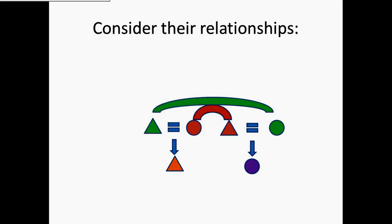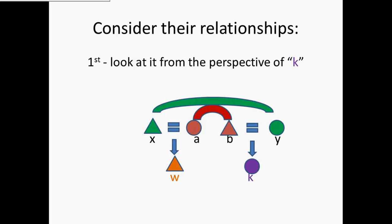We do this by looking closely at their relationships through their parents. We're going to call the offspring of green man and red woman W — that's the orange triangle, who happens to be male. The offspring of red man and green woman, K, is female. Starting from K's perspective and looking at her relationship to W: Y is K's mother, and X is the brother of her mother — he's the mother's brother. This means W is the mother's brother's son from K's perspective, making W her matrilateral cross cousin.